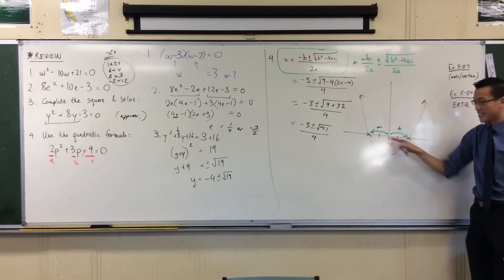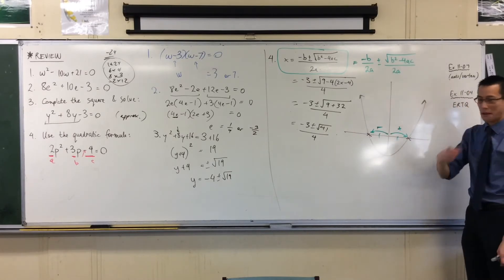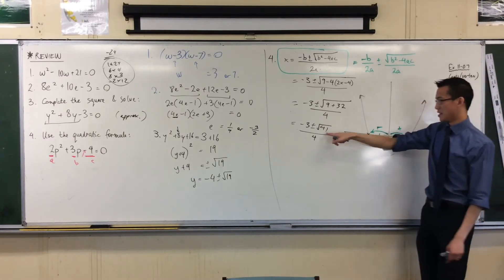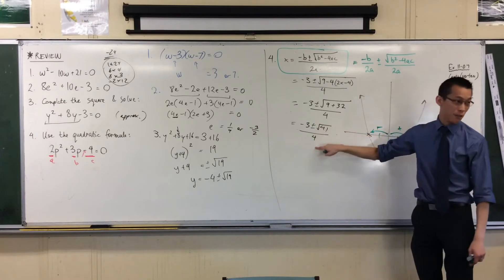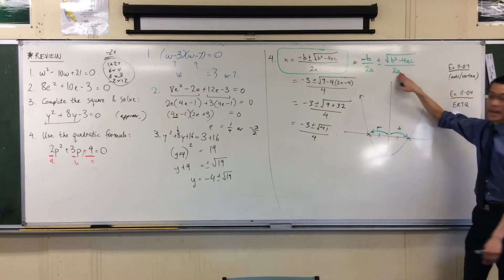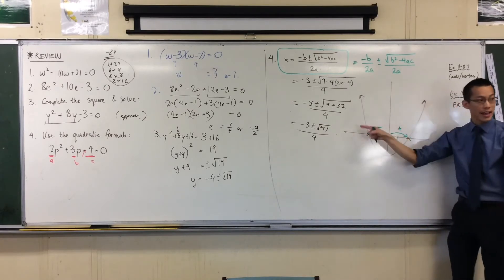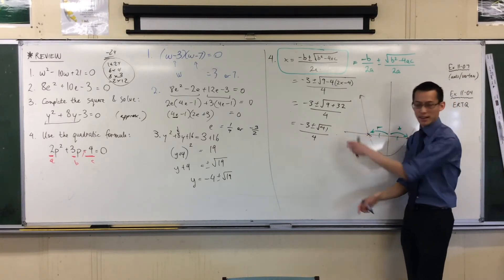And how far do you go? What's that distance? What's that two centimeters like that I was talking about with my eyes? It's whatever this is equal to, which will be some weird number. In this case, it's the square root of 41 over 4. That's a bit weird, but what I care about is that it's the same. I go to the right that much, and I go to the left that much.